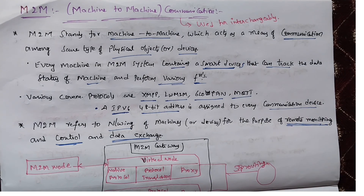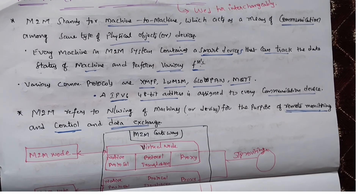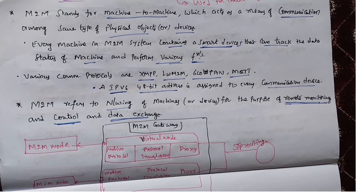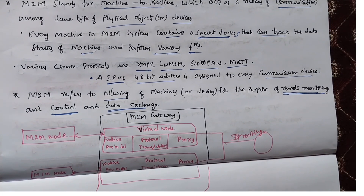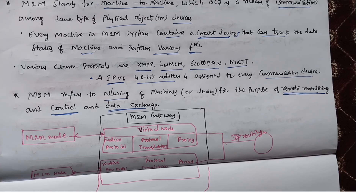Here we will see some block diagrams for M2M communication. The communication network provides connectivity to remote M2M area networks. That communication network can be either a wired or wireless network.